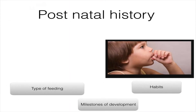Postnatal history includes the patient's type of feeding — either bottle feeding or breast feeding — milestones of development like crawling and walking, and various habits commonly seen in children such as thumb sucking, mouth breathing, and lip biting. A typical thumb sucker will have proclined upper anteriors, retroclined lower anteriors, and anterior open bite. A mouth breather will have adenoid facies and a long face.